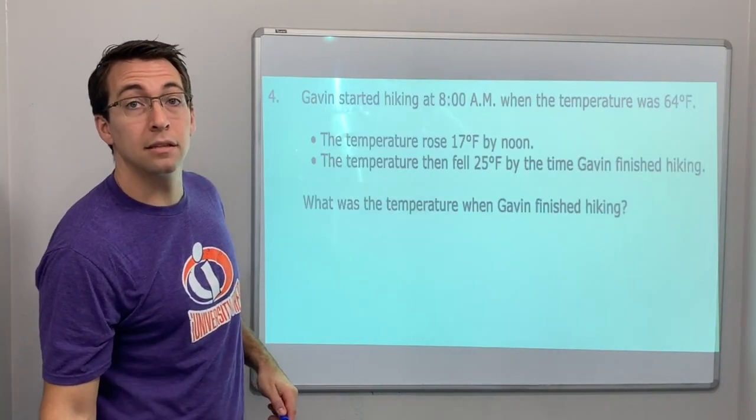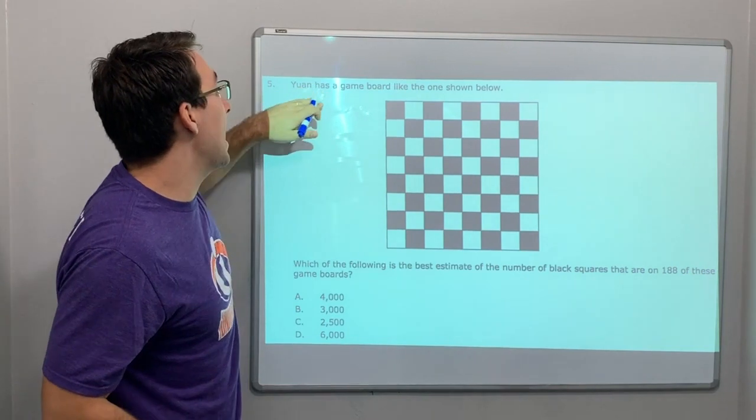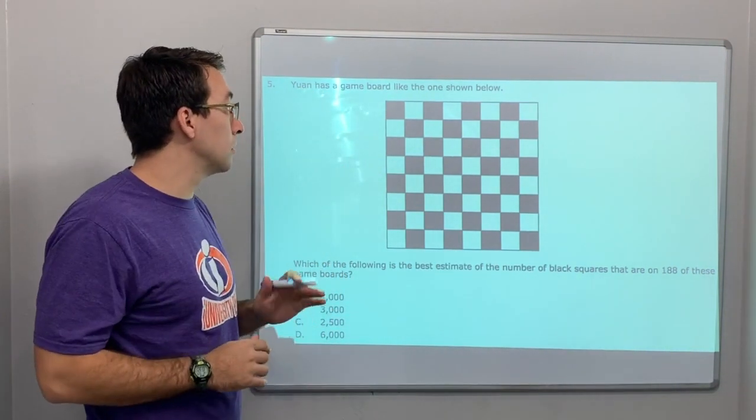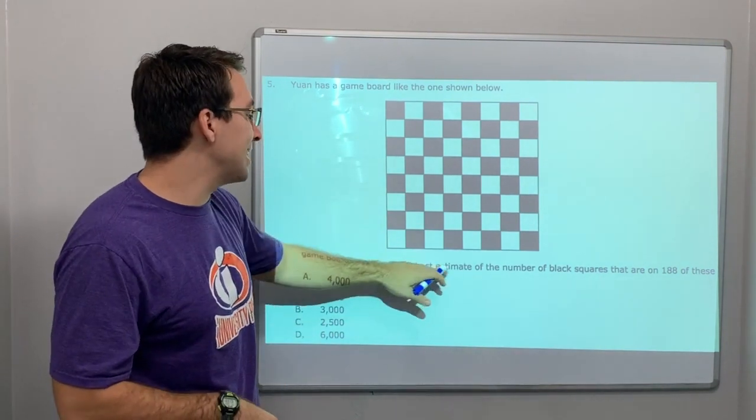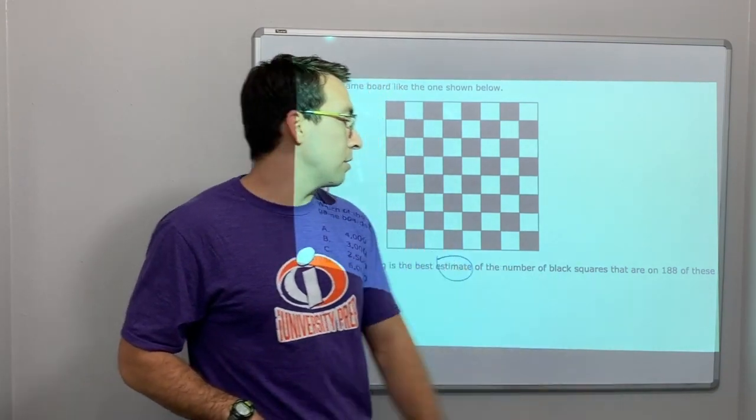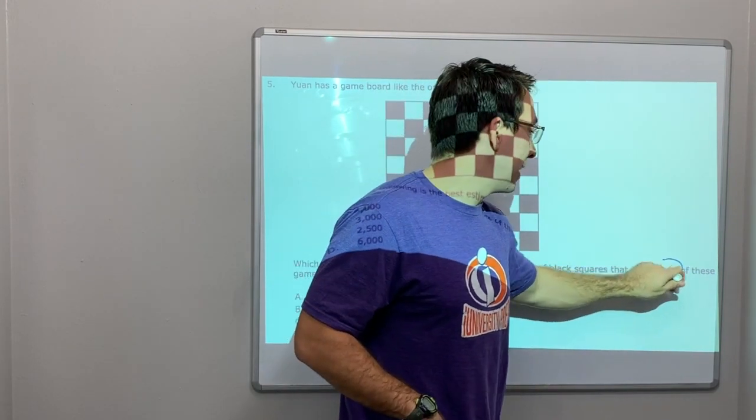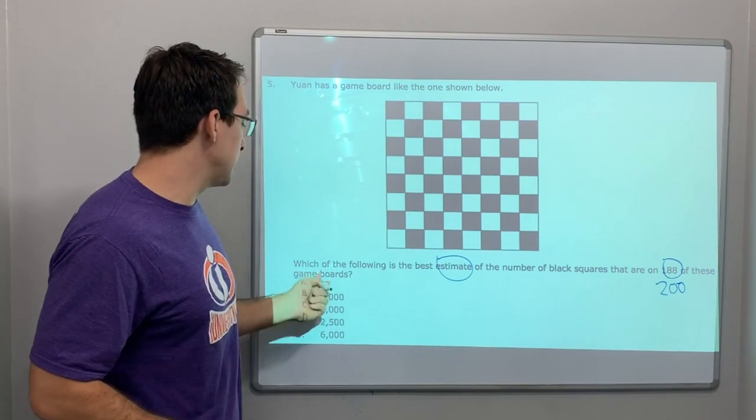So now, let's get to it. Jan has a game board that looks like the one shown below. Looks like a checkerboard or a chessboard. Which of the following is the best estimate of the number of black squares that are on 188? Well, let's estimate. 188 is like 200, right? Of these boards.